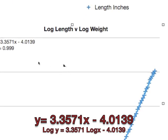Of course we have the equation y equals 3.3571x minus the intercept of 4.0139, with an r squared value of 0.999.